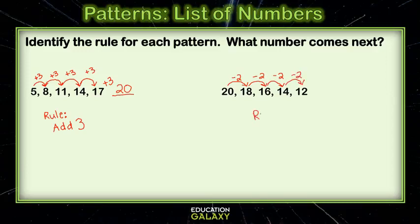So, the rule must be subtract 2. Then, if I want to know what number comes next, I need to continue the pattern and subtract another 2. 12 minus 2 is 10. So, 10 must come next.